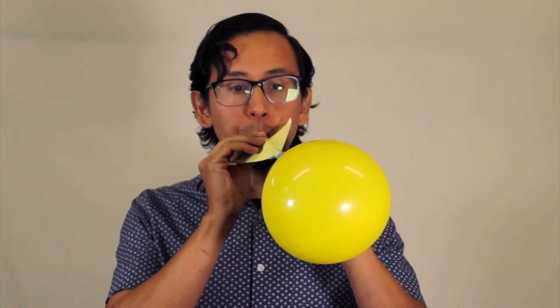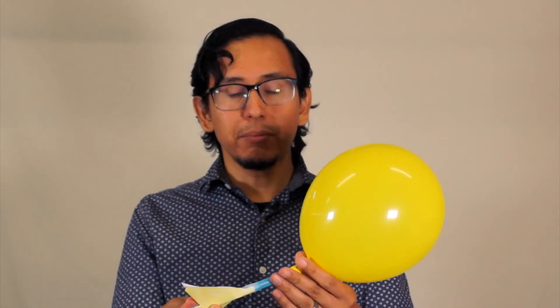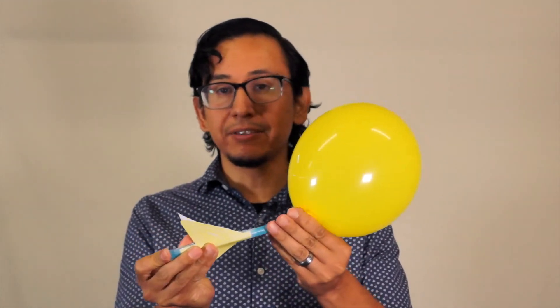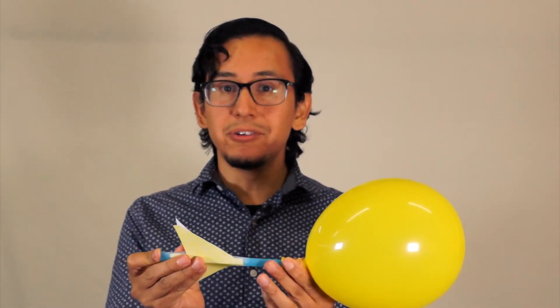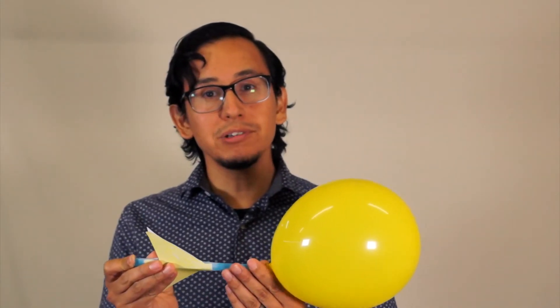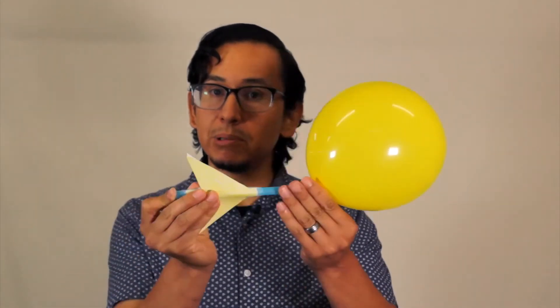What is the science behind the balloon rocket? When you blow up the rocket, you are creating potential energy that is inside the rocket. And when you let go of the rocket, that potential energy changes to kinetic energy and creates something called thrust. And thrust is a pushing force that then moves the balloon forward.